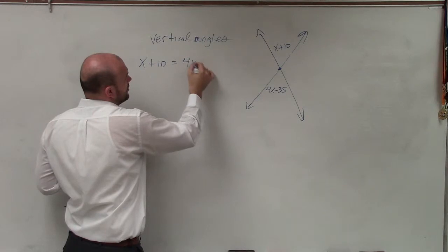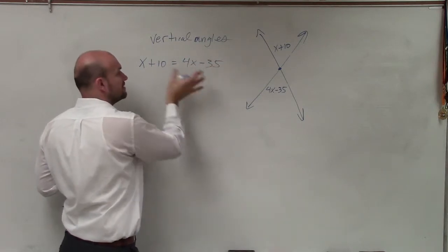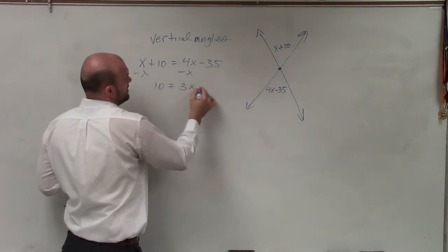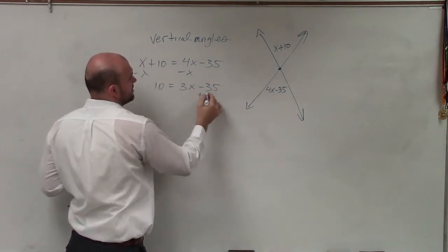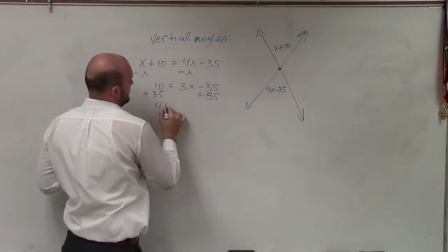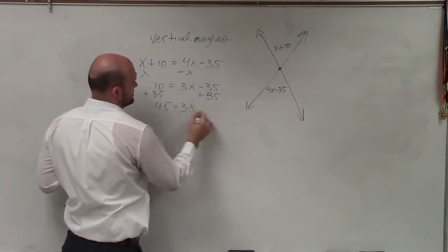Now to go ahead and solve this, I'm just going to solve for x. So I have 10 equals 3x minus 35, add 35 and I get 45 equals 3x, divide by 3, x equals 15.